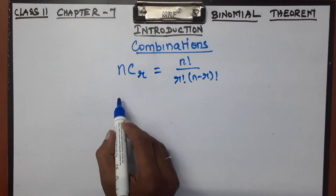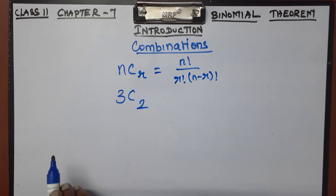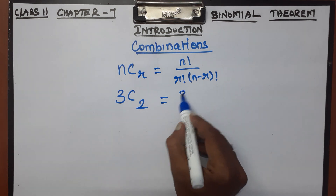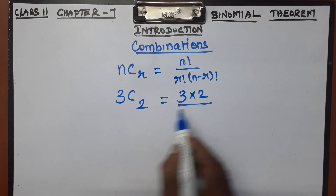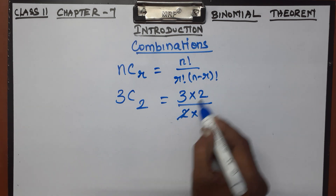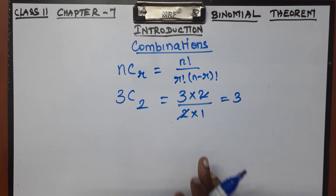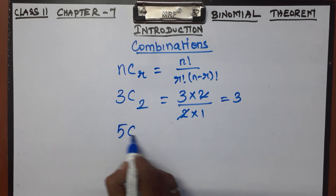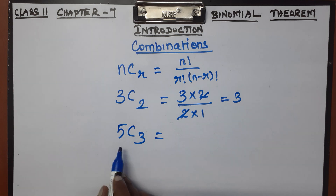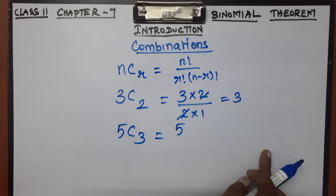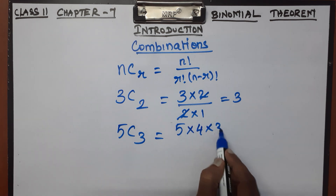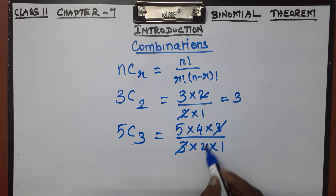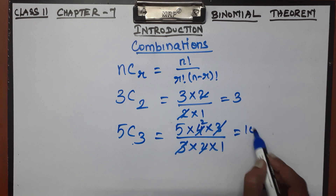For example, 3C2: that is 3 terms on top, 2 terms, so 3 × 2 divided by 2 × 1, which gives 3. For 5C3: it is 5 × 4 × 3 divided by 3 × 2 × 1, the 3s cancel, giving 5 × 2 = 10. Clear?